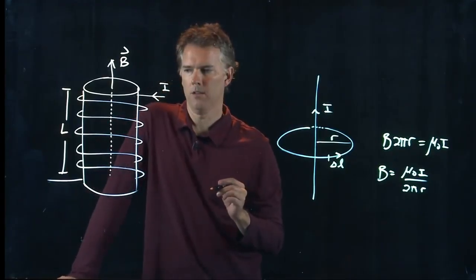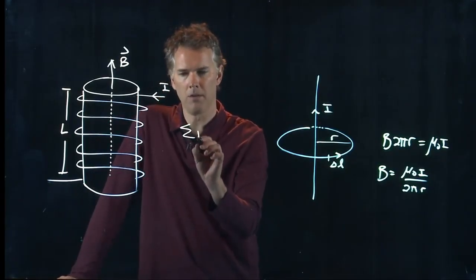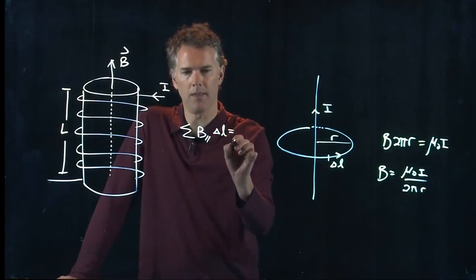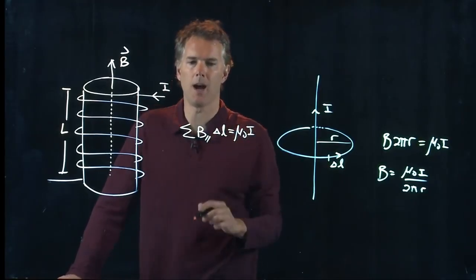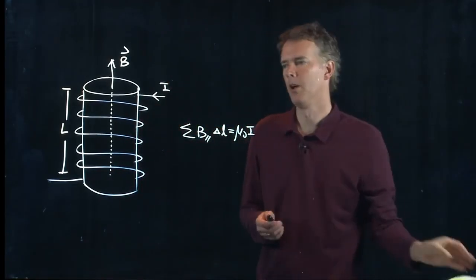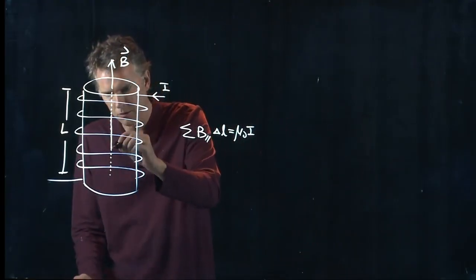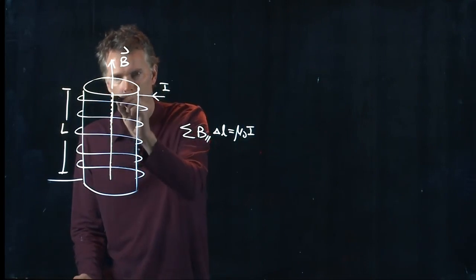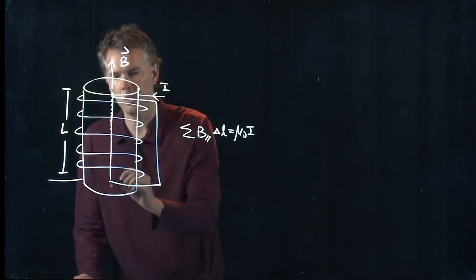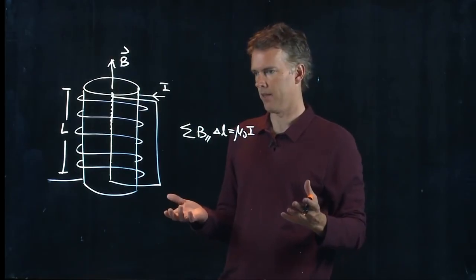Ampere's law says sum the B parallel over ΔL and that's got to be equal to μ₀I. Well, it turns out if I draw a path that goes right down the center, comes out, completes the rectangle, that is a perfectly valid path.